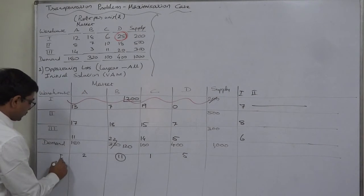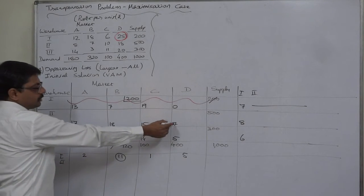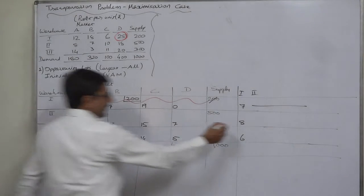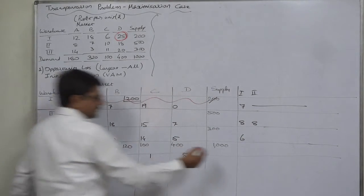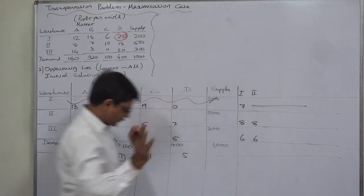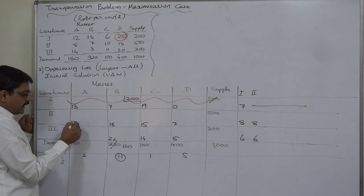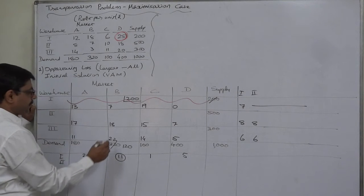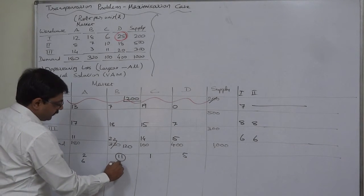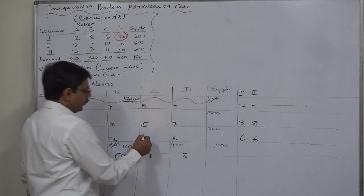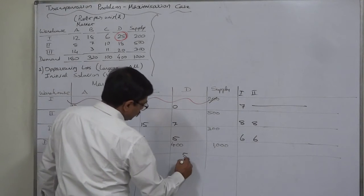Now perform the same exercise for the remaining rows and columns. For row 2: least cost 7, immediate higher 15, penalty remains 8. For row 3: least cost 5, immediate higher 11, penalty is 6. For column A: least cost 11, immediate higher 17, penalty is 6. For column B: least cost 18, immediate higher 22, penalty is 4. For column C: least cost 14, immediate higher 15, penalty is 1. For column D: least cost 5, immediate higher 7, penalty is 2.